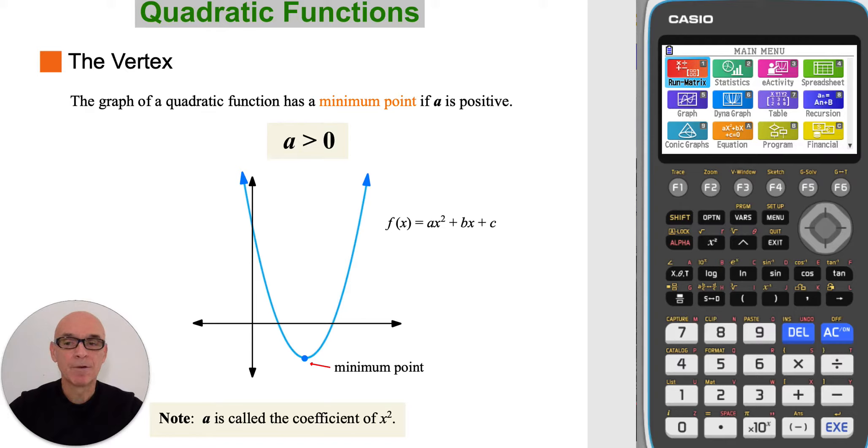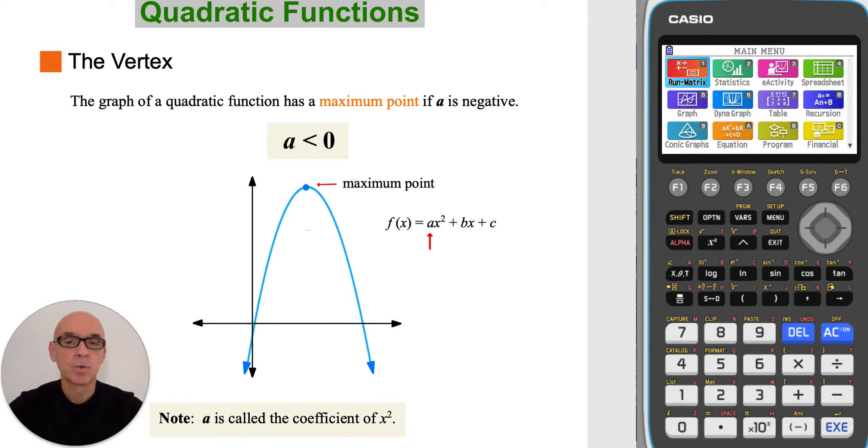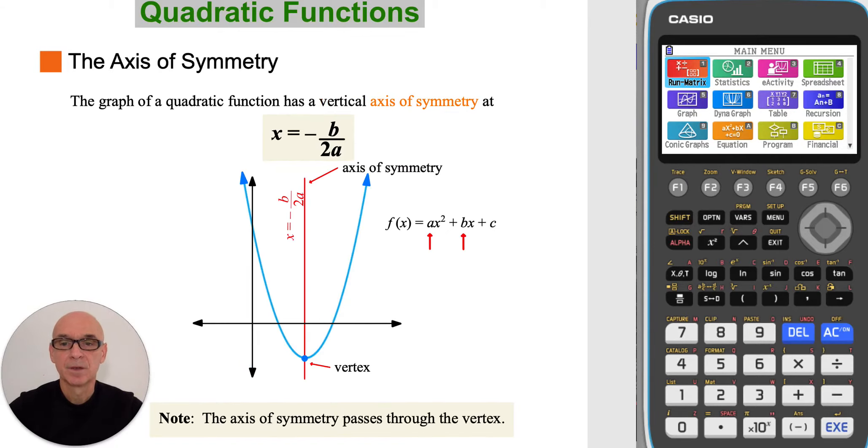The function will have a minimum point if the value of a is positive, i.e. if a is greater than zero. The function has a vertical axis of symmetry at x equals negative b over 2a.